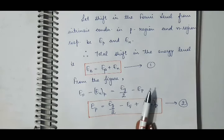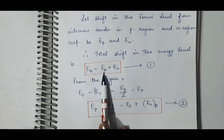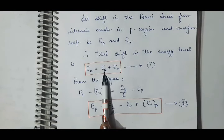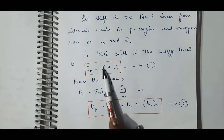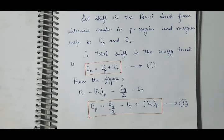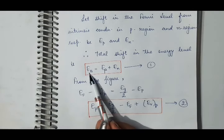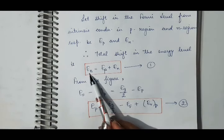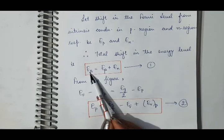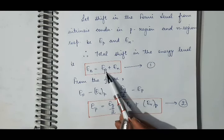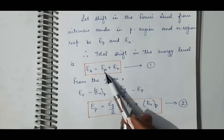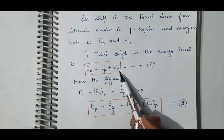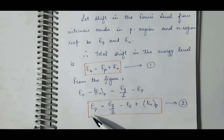The total change in the P-N junction — the change in energy on the P-side plus the change in energy on the N-side — equals Ep plus En, and this gives rise to the barrier energy Eb. We have to calculate this Eb, meaning we need to derive the expressions for Ep and En. Looking at the figure, we calculate the expression for Ep.